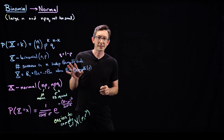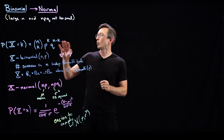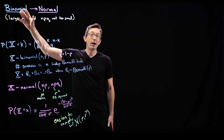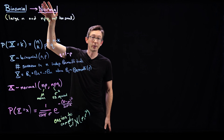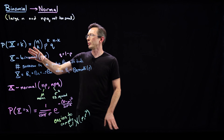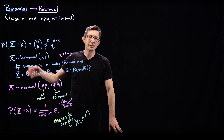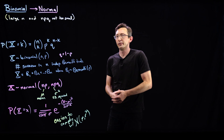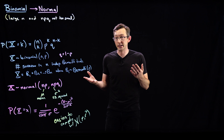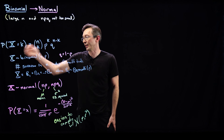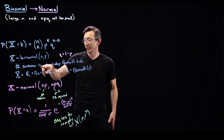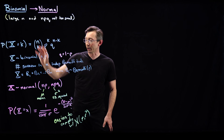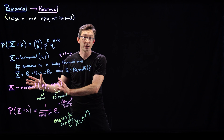Welcome back. In the last lecture, we showed that for relatively large n and moderate probabilities, the binomial distribution starts to converge to the normal distribution. Remember that the binomial distribution is how you count successes in a bunch of independent trials. If I flip 100 coins, what's the probability of getting a certain number of heads? When n is large, that starts to converge to the normal distribution.